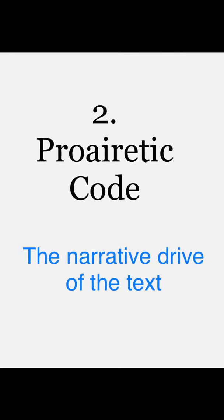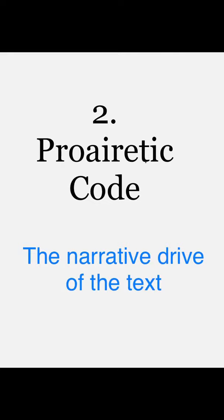The second code is the Proairetic Code, which represents the narrative drive of the text — what takes the narrative forward. It is a progression of sequences encompassing the actions or small sequences of the narrative which create narrative tension. For example, if someone is sleeping, we anticipate them waking up, thus creating a small structure of narrative tension and expectations. Out of these units, the whole narrative has a forward drive.